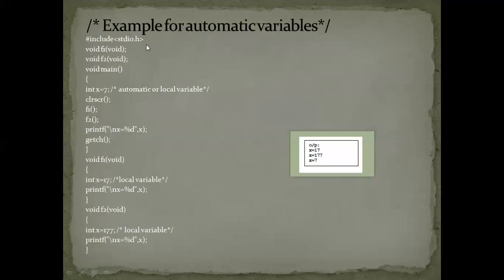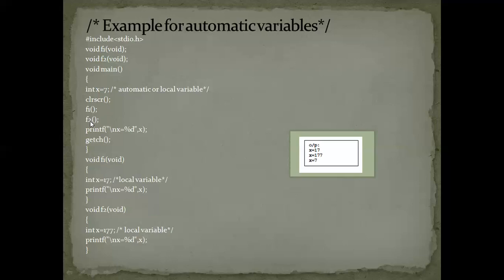Let's see an example of automatic variables. This is a header file, and I have two functions: F1 and F2. Neither function returns any value nor takes any parameters. Program execution starts from main. I have declared and initialized variable X here. These two functions F1 and F2 are called from main.